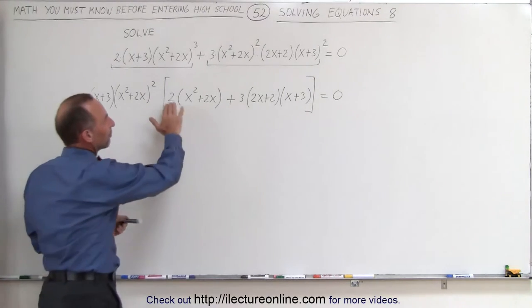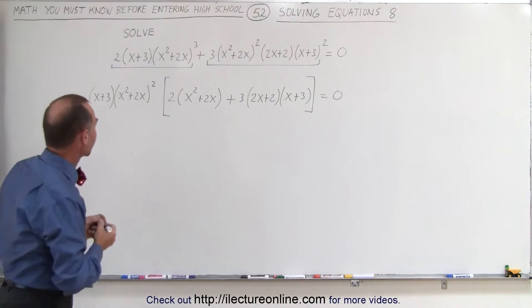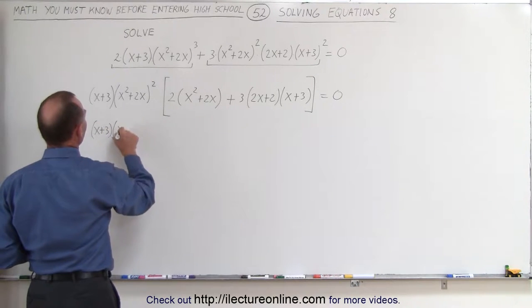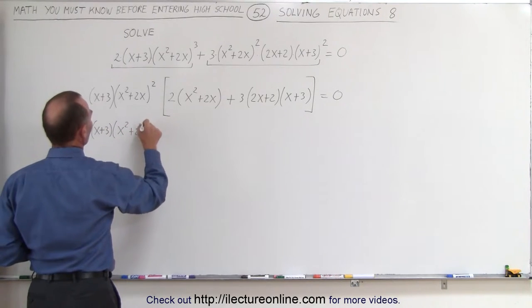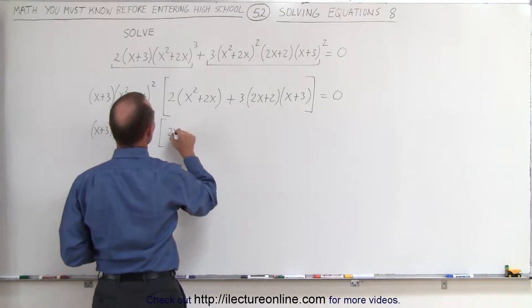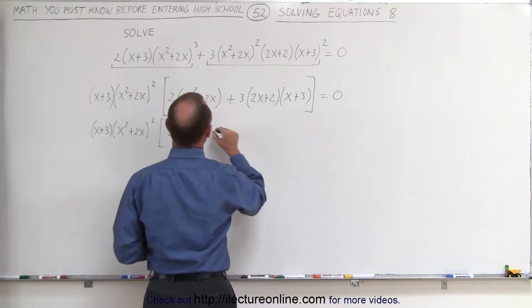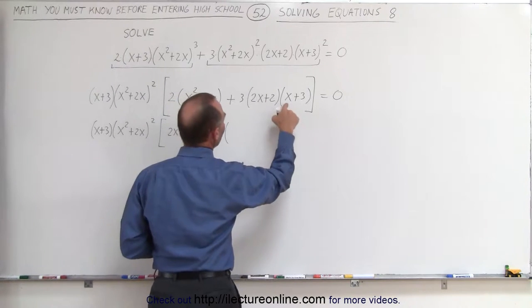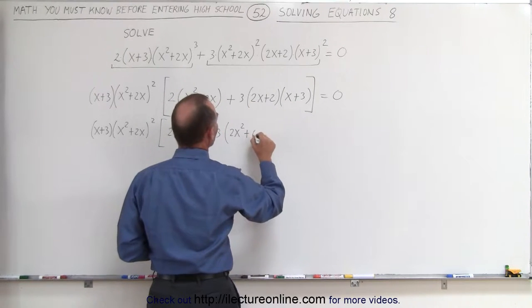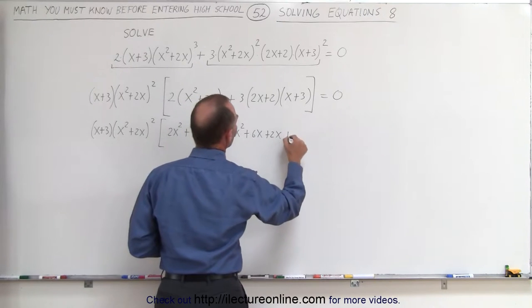Now I believe we should try to simplify this. We're going to multiply all this out and combine like terms and see what we get. So here we end up with the quantity x plus 3, times x squared plus 2x to the second power, and then here in the brackets, when we multiply this together, we get 2x squared plus 4x, and here we get plus 3 times 2x times x which is 2x squared, 2x times 3 which is plus 6x, 2 times x is plus 2x, and 2 times 3 is plus 6.